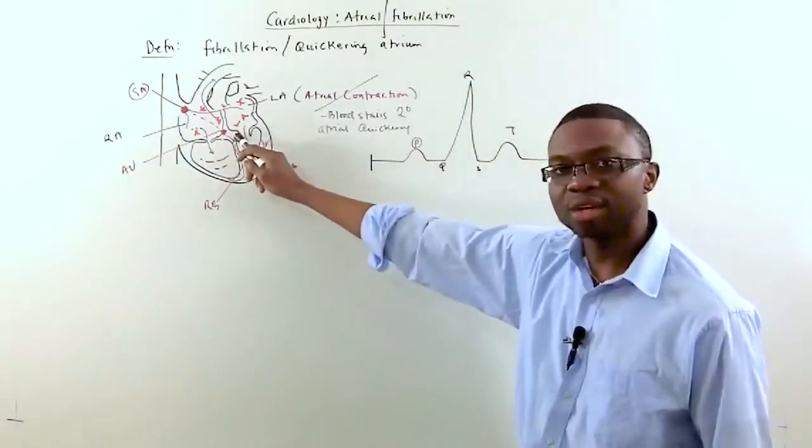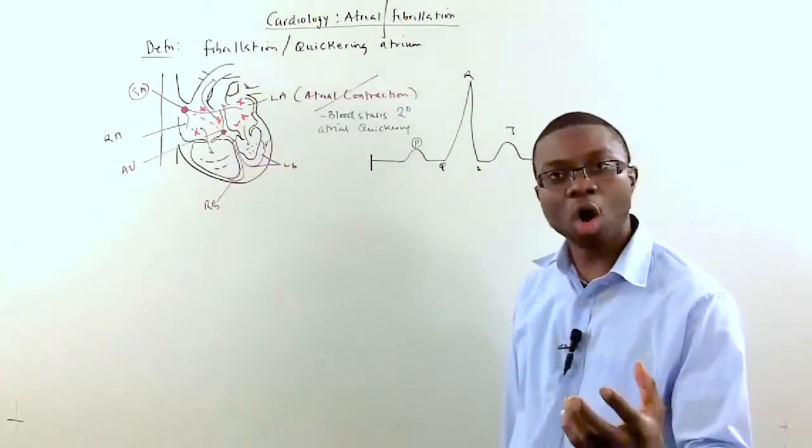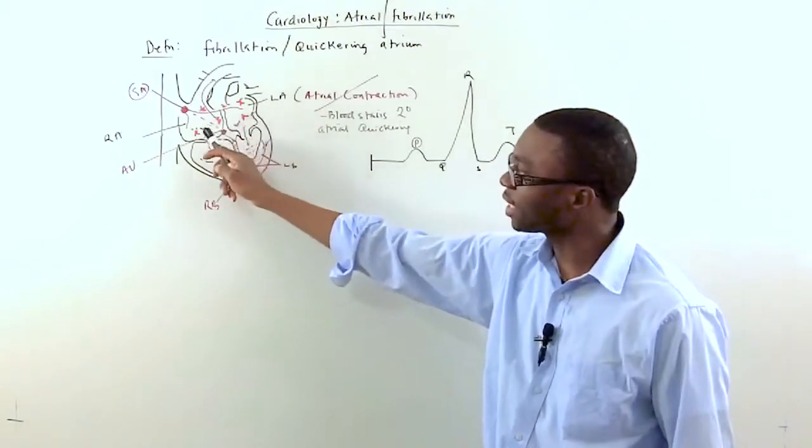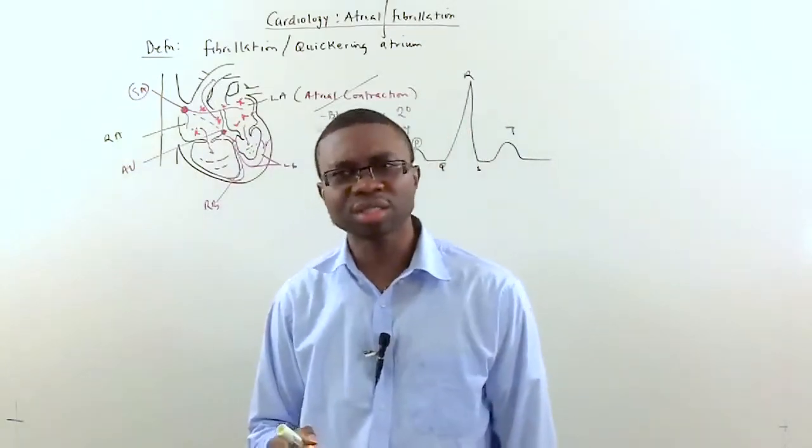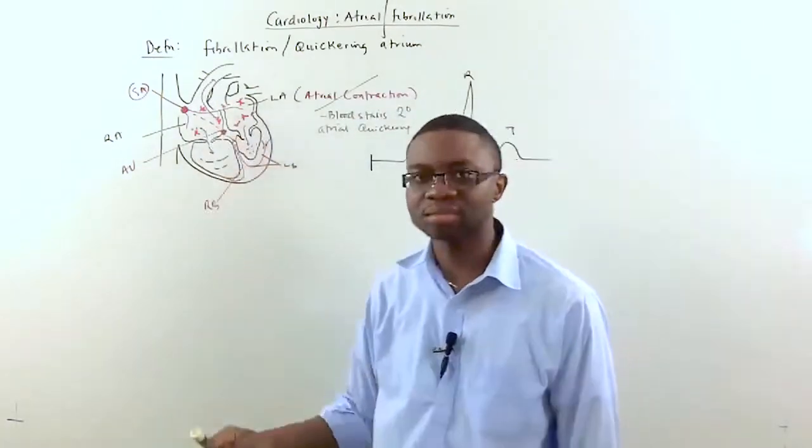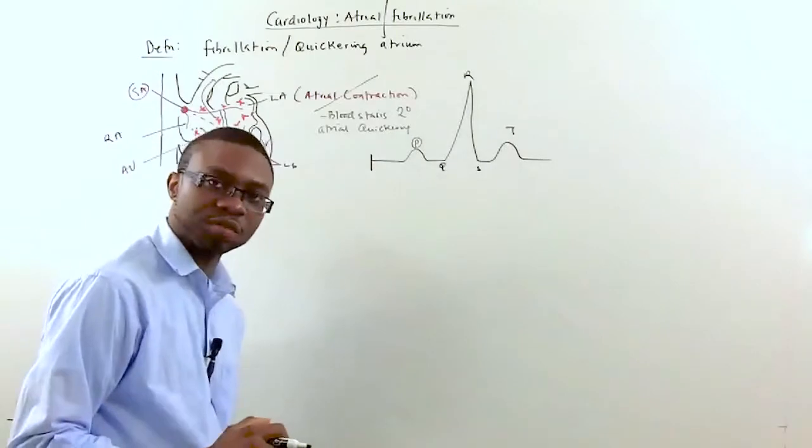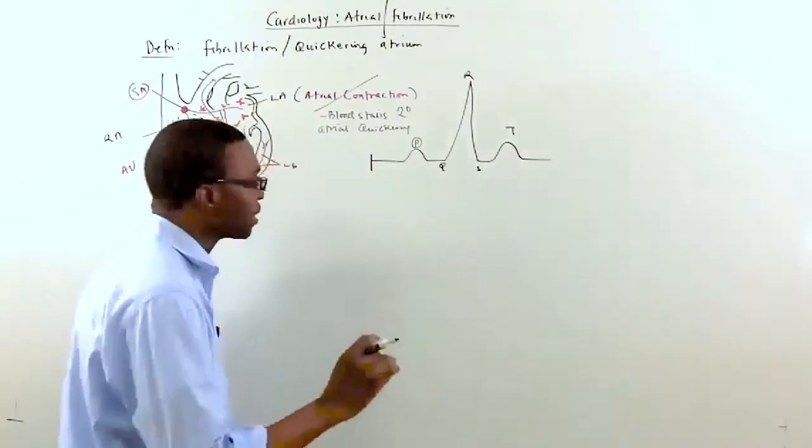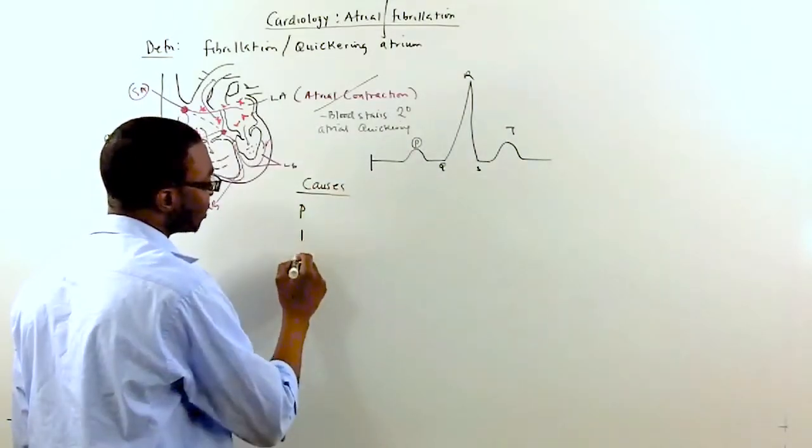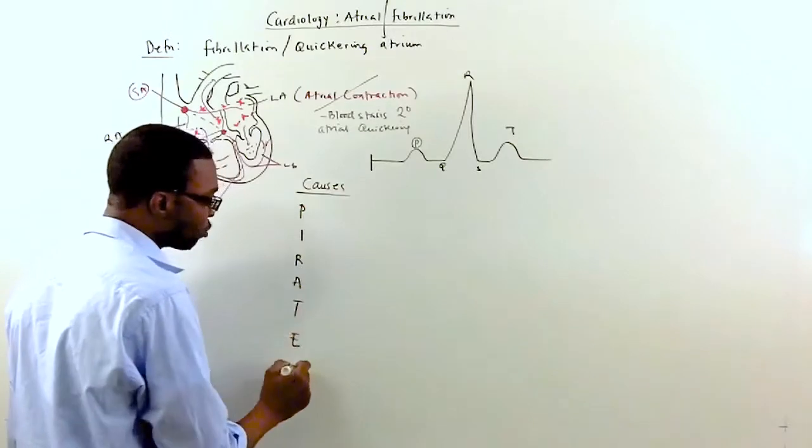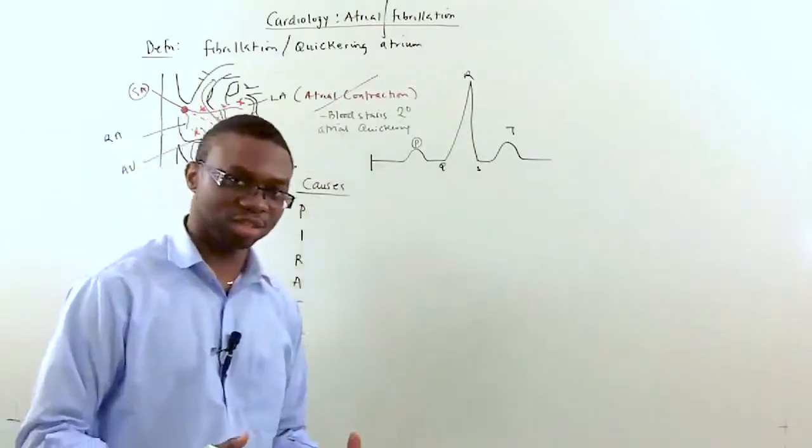Now, this is not good for the body because that means the body is not getting the full maximum cardiac output from the heart because a little bit of blood is getting left behind inside the atrium. Now, you're probably wondering what can cause this to happen? Well, let's go over the causes of atrial fibrillation. And once we talk about causes of atrial fibrillation, then we'll be able to show you what it looks like in an electrocardiogram. So causes, the mnemonic for atrial fibrillation is caused by the pirates.